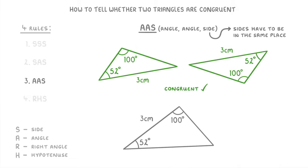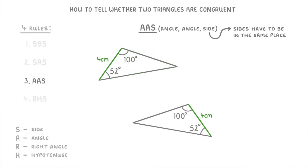In contrast, if you look at this triangle here, the 3cm side is no longer opposite the 100-degree angle — instead, it's in between the two angles. So because it's in a different place relative to the angles, it doesn't count as congruent to our original two triangles. This rule can sometimes be a little bit confusing, so let's try another example where we're told that these sides are 4cm instead. In this case, because the 4cm sides are in between the same two angles, these two would fulfill the criteria and count as congruent.